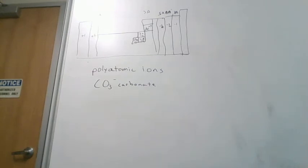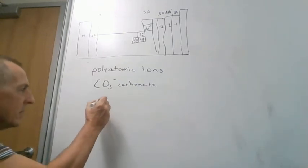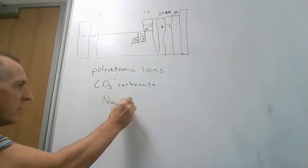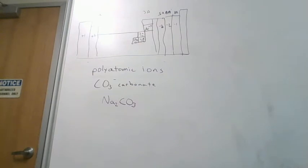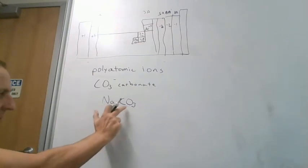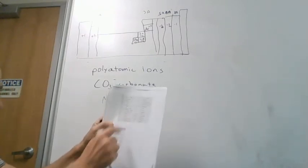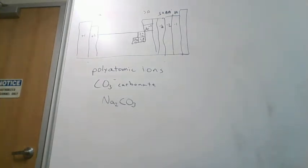So let's look at how that affects our naming. If we have something like Na2CO3, the first thing to recognize is it's not binary, because binary means two, and we have one, two, three elements in this. So as soon as you see something with more than two different elements, you should get your table of polyatomic ions, and that should clue you in that you have a polyatomic ion in here.